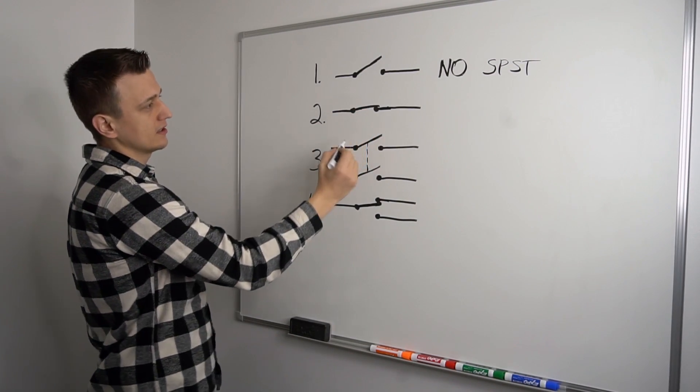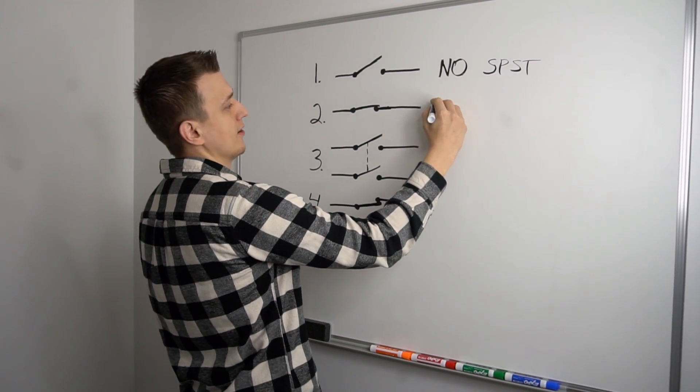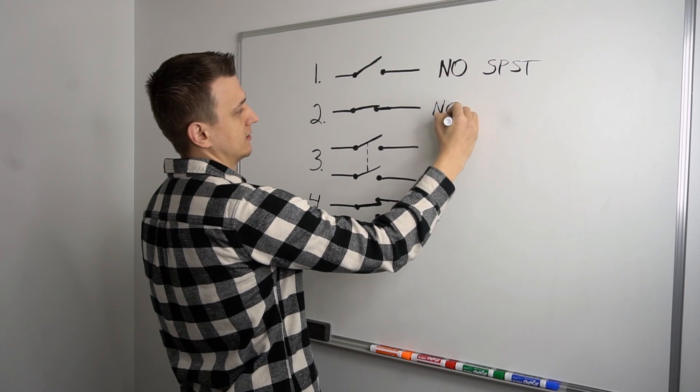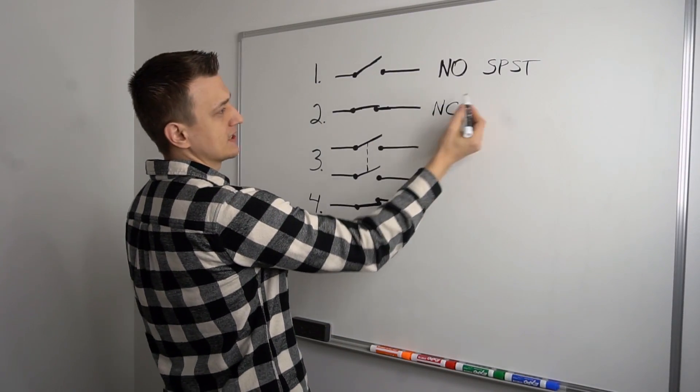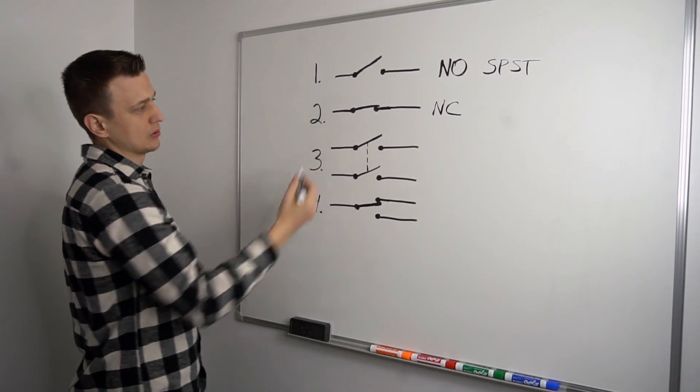And this switch right here is a NC, or a normally closed switch. So with the power off to the unit, or in normal operating conditions with the power off, this switch would be closed normally. And once again, it's a SPST, single pole, single throw.